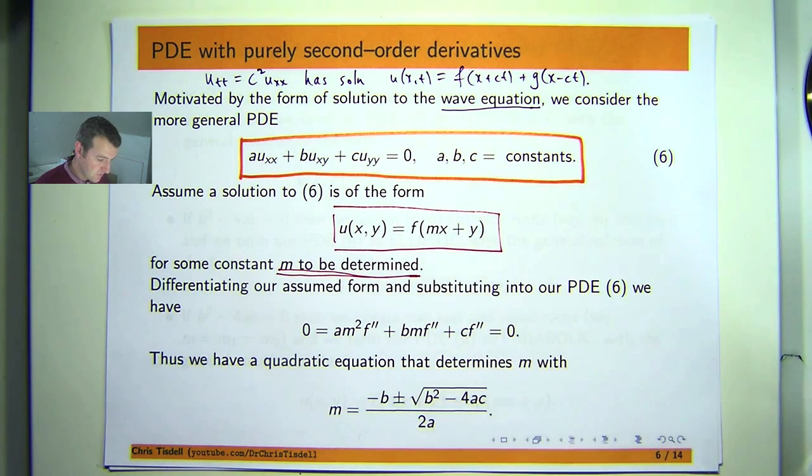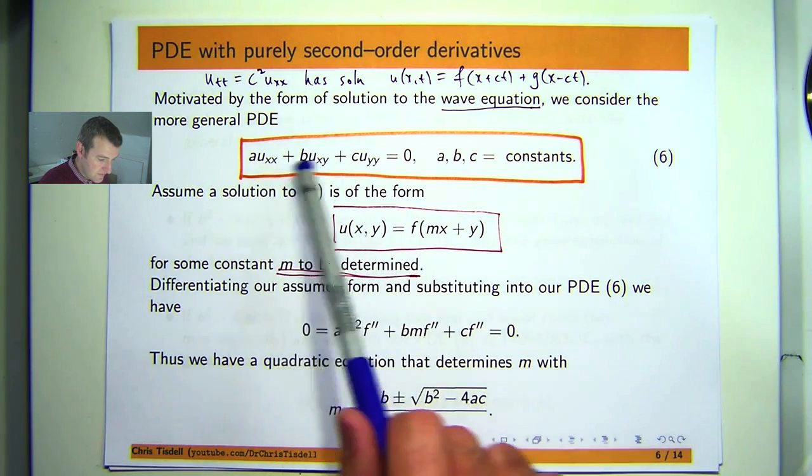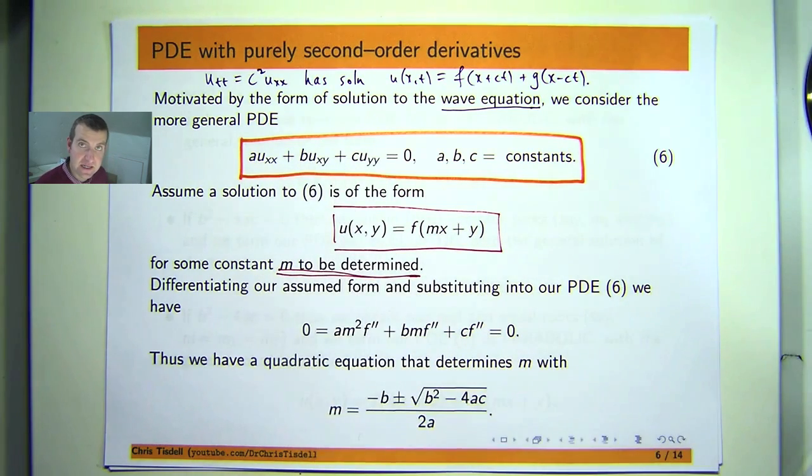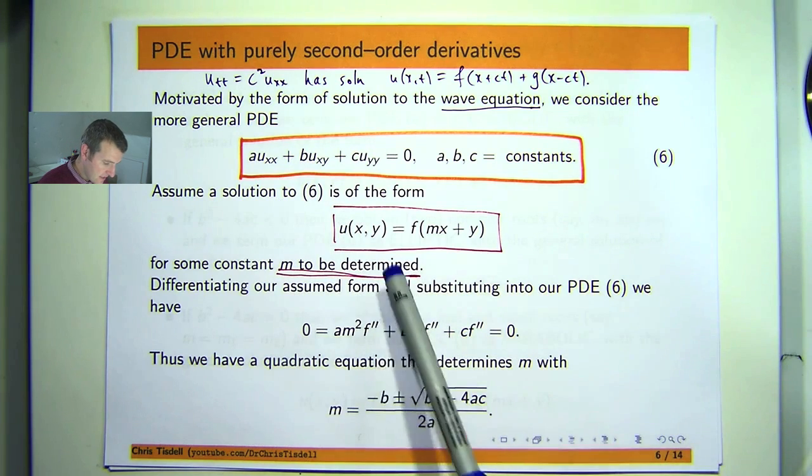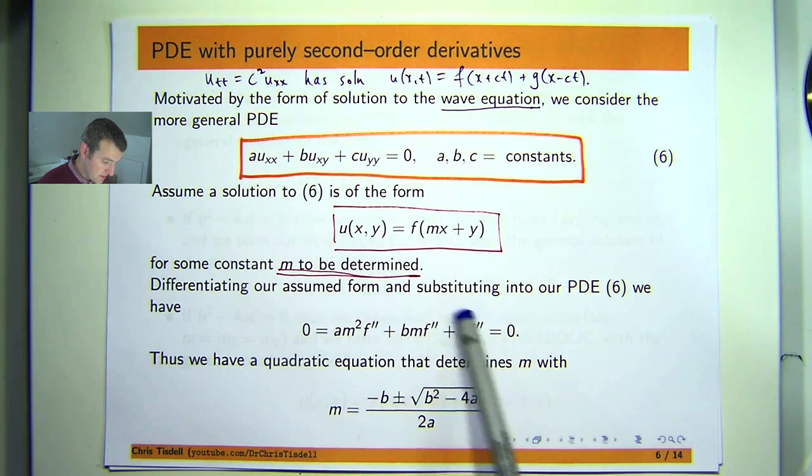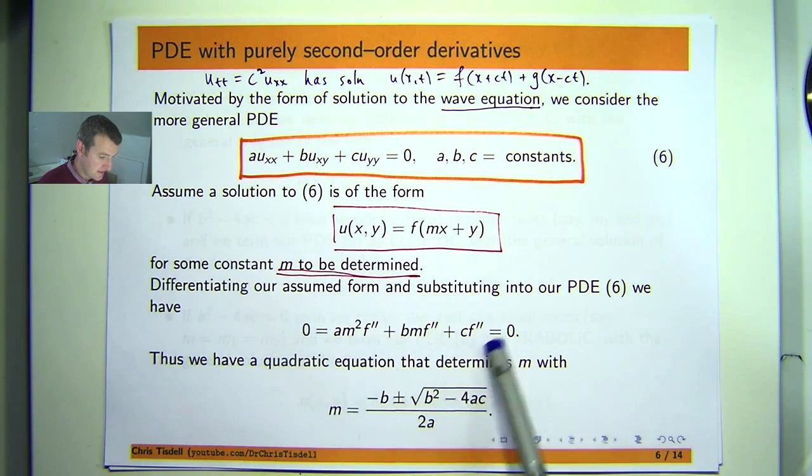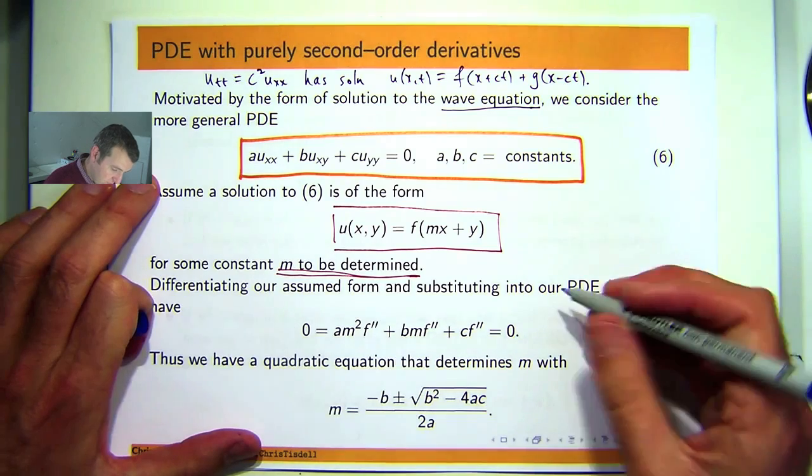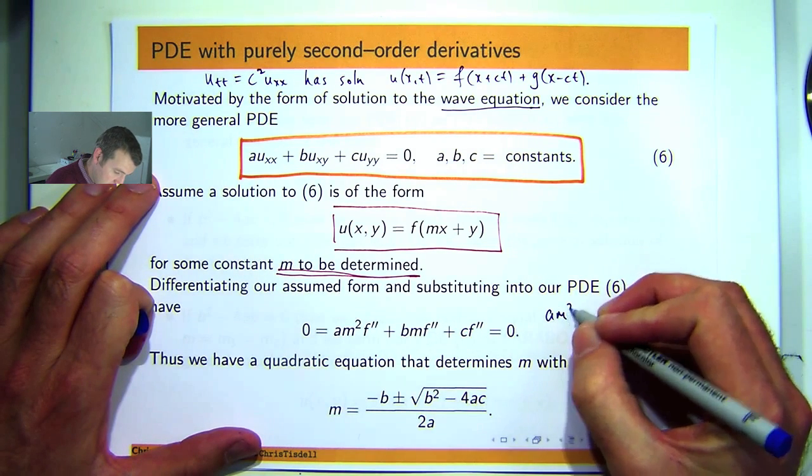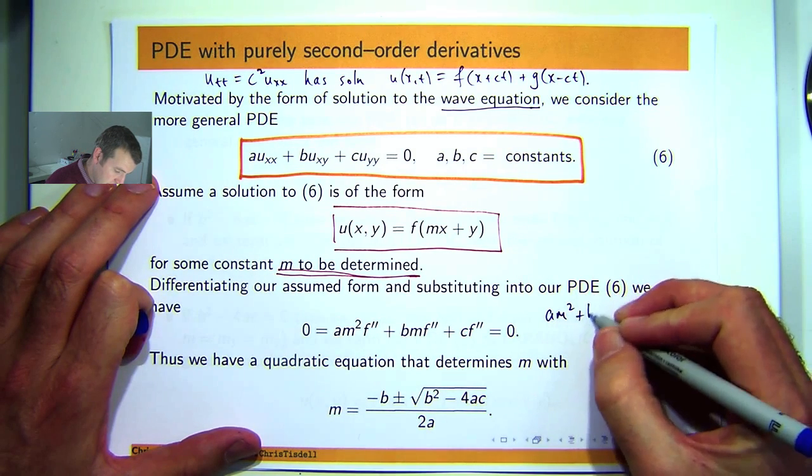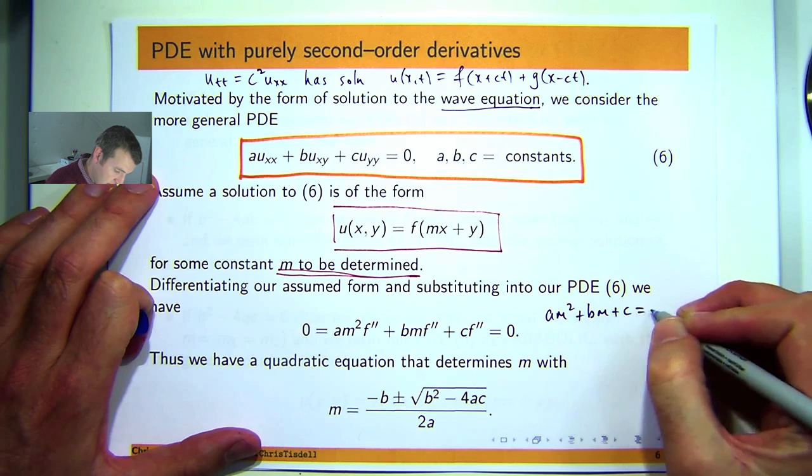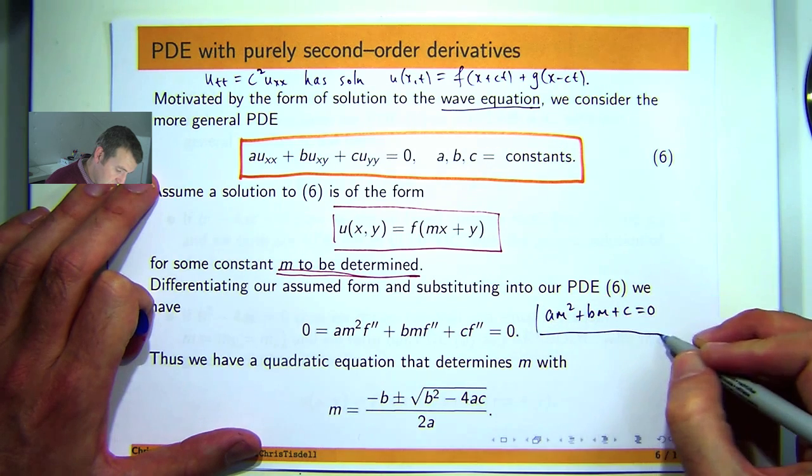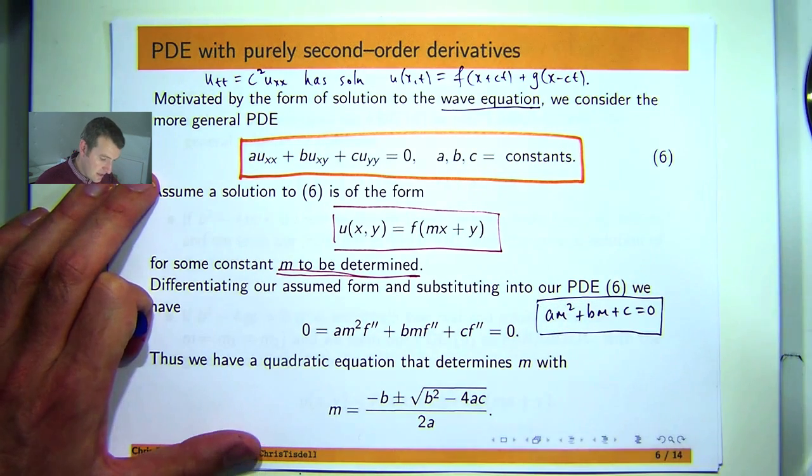If we take this form, compute the derivatives in equation 6 and set it equal to 0, you'll get this expression here, just by using the chain rule. Thus we have this. Now you can take out a common factor of F' here and you're left with the following, just a quadratic equation.